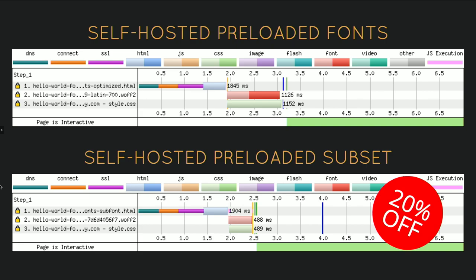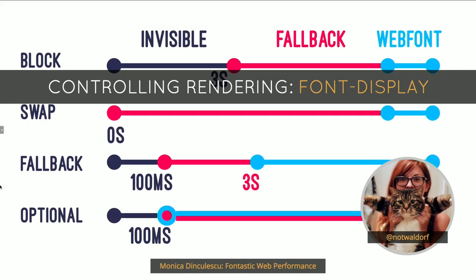Obviously not everybody writes only Hello World. You might have more text, more font variants, and fonts big enough that they still kick in after your CSS is loaded — which means you might still deal with a flash of invisible text. Luckily, you can instruct the browser how to handle that using the font-display property: the default makes text invisible, but you can instruct it to render immediately or in a different way. I highly recommend looking at Monika Dinkulescu's talk about this — she goes really in depth about how the rendering pipeline works.